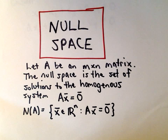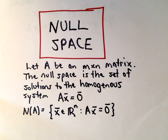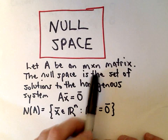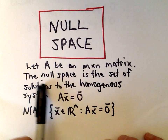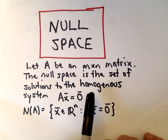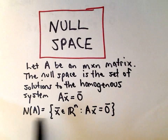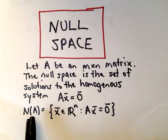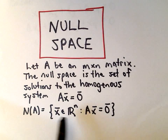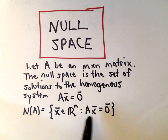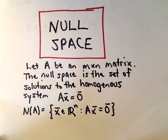In this example, I want to start talking about the null space, so let's do the definition real quick and then we'll go through a quick example. We're going to let A be an n by n matrix. The null space is the set of solutions to the homogeneous system A multiplied by x equals zero — that is, the set of vectors in R^n such that A times x equals zero.